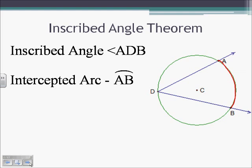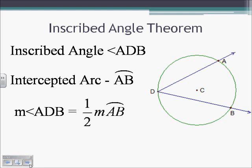The intercepted arc and the inscribed angle relate to each other. The measure of the angle is equal to half of the measure of the arc. So if arc AB was 24, then the angle would be 12, because the arc is twice as big as the angle.